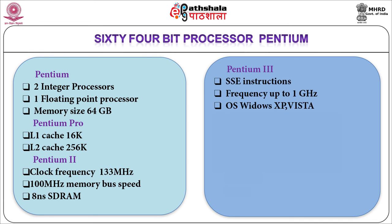Pentium 3 is available in two versions: slot 1 and flip chip. Cache size in the slot 1 version is 512 KB while in the flip chip version it is 256 KB. SSE instructions are added to speed up floating point and parallel calculations. It is suitable for 3D rendering, imaging, video streaming, speech recognition and audio applications, operating on Windows XP and Vista.